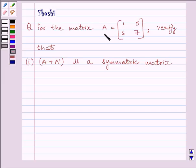Question is, for the matrix A is equal to matrix 1, 5, 6, 7, verify that A plus A transpose is a symmetric matrix.